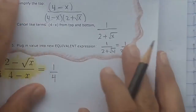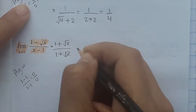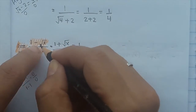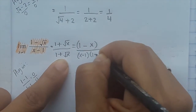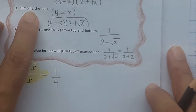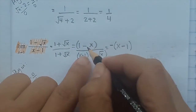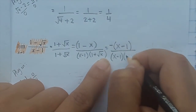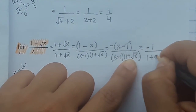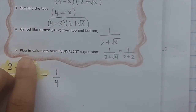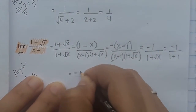One last example. Plugging in already confirmed it doesn't work, so we conjugate again — multiply top and bottom, changing the sign in the middle to give (1 plus radical x). 1 times 1 is 1, the two middle terms cancel, and radical x times radical x gives x. Keep the bottom the same. One quick trick: factor out a negative from the numerator, giving negative (x minus 1) — now it matches a factor on the bottom and we can cancel like terms. We're left with negative 1 over (1 plus radical x). Plugging in x=1: negative 1 over (1 plus 1) = negative 1 over 2.